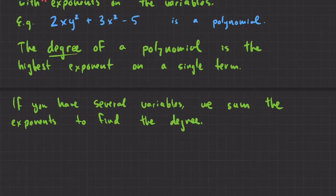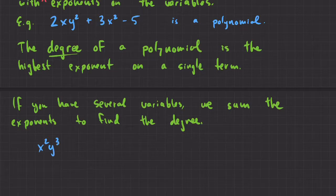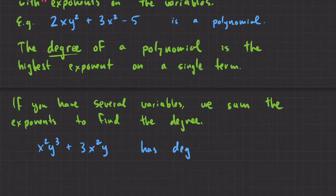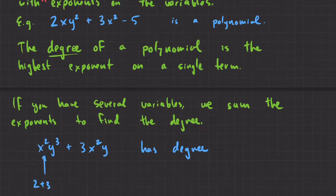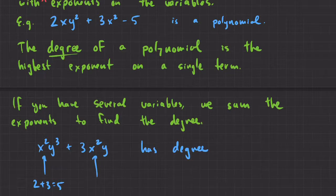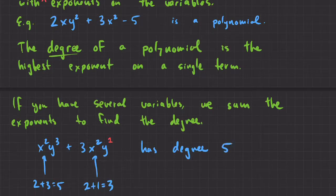So I'll give you a quick example. So x squared y cubed plus 3x squared y has degree, well, this one has 2 plus 3 is 5. This one has, well, don't forget about that invisible 1. If you don't have an exponent, it means that there's an exponent of 1, because x to the power of 1 is just equal to x. So this one would be 2 plus 1 equals 3. So the degree on this polynomial is 5.